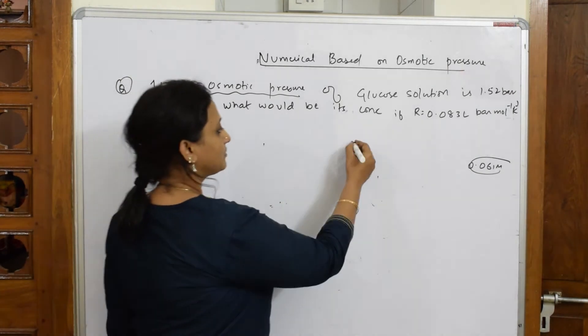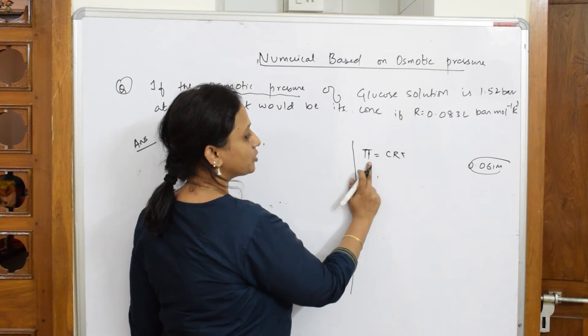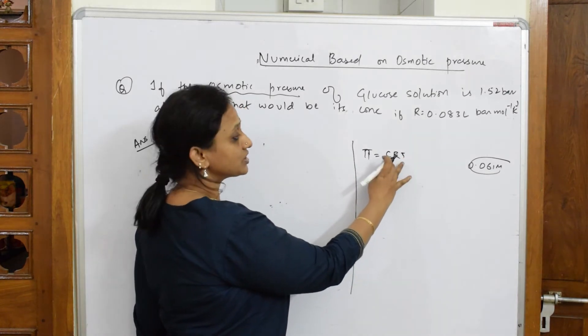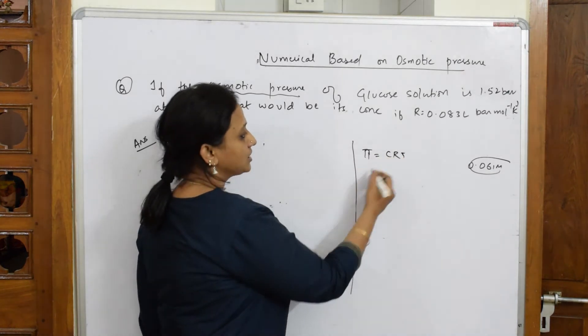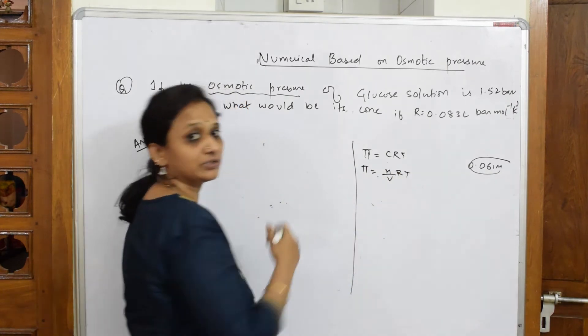So first write the formula. The formula is π equals what we have learned already, π equals CRT, because osmotic pressure depends upon the concentration as well as temperature. We very well know π equals C. Again, let us write and keep it so that it may be useful in the sum.